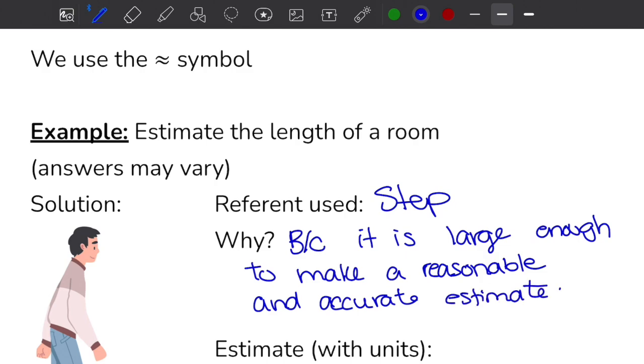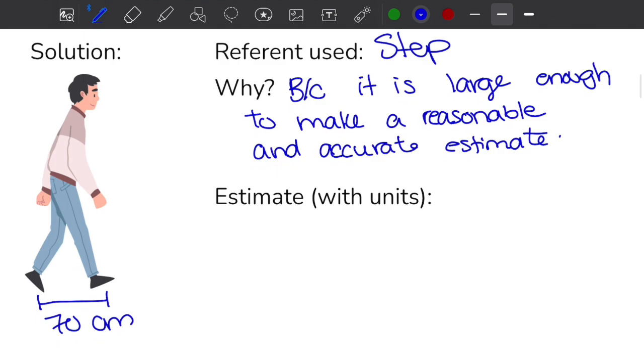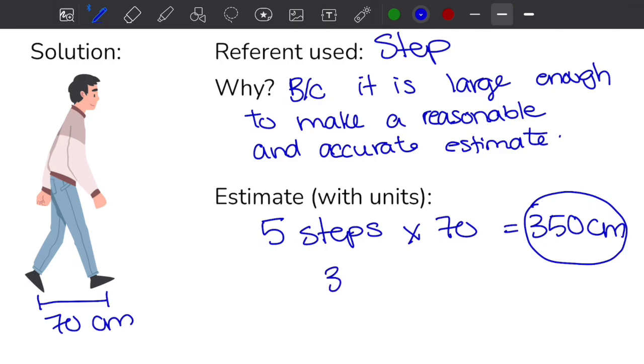The estimate now—I got up and I walked across the length of my room and it ended up being five steps. So I'm going to write five steps, but I know that every step is 70 centimeters, so I'm going to multiply by 70. So 5 times 70 is 350 centimeters. So this is my estimate for the length of my room. Now if you wanted to write that in meters, you can say 3.5 meters, because we divide by 100. Both are fine.